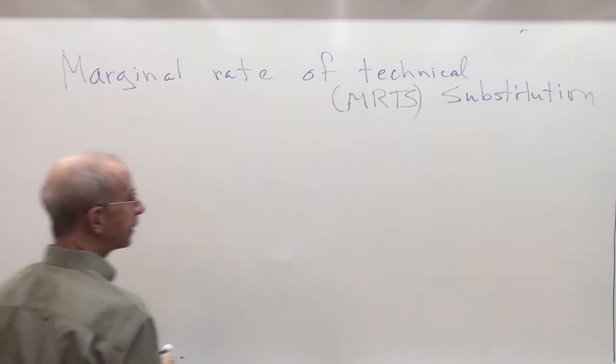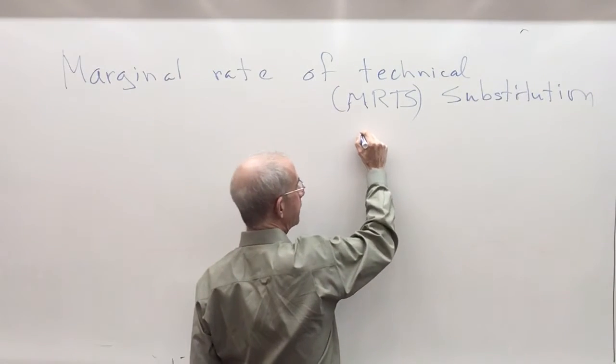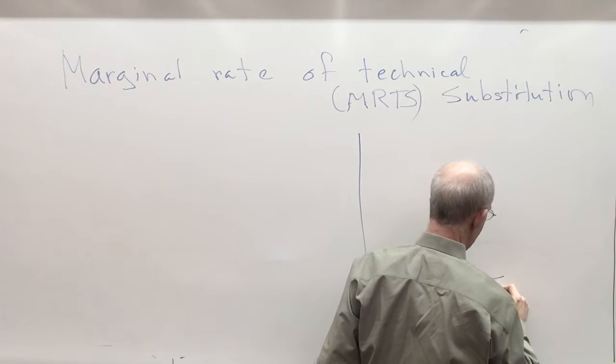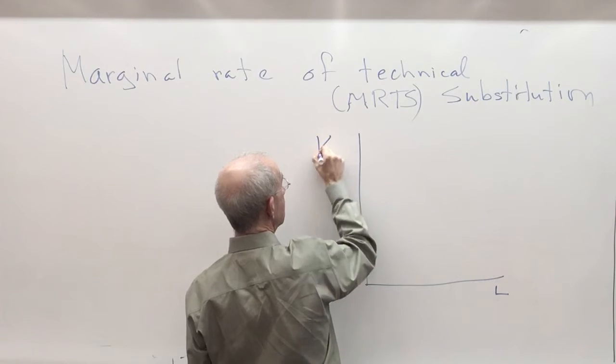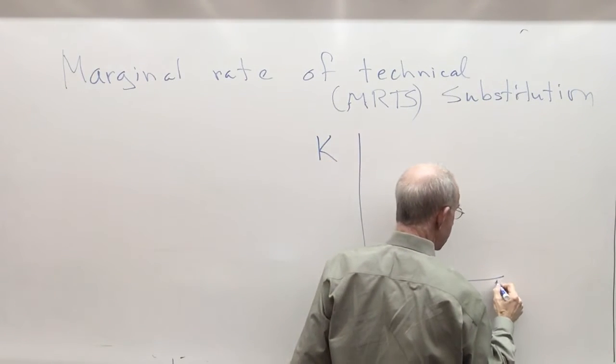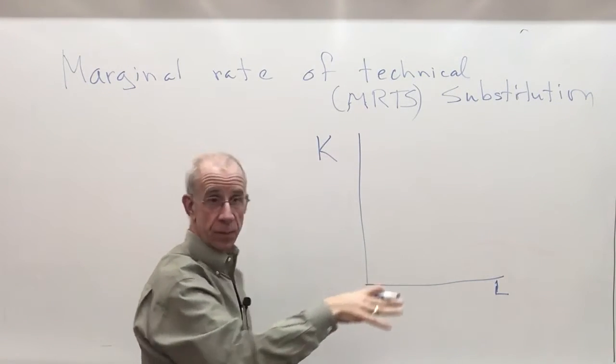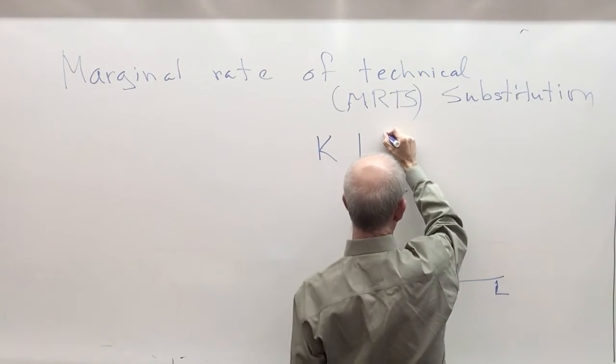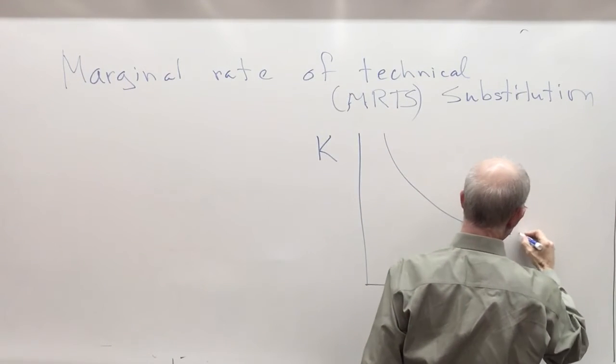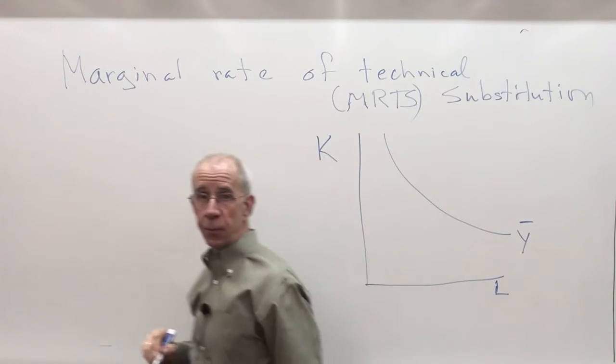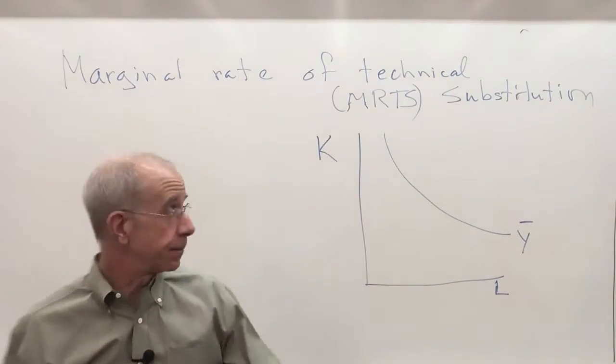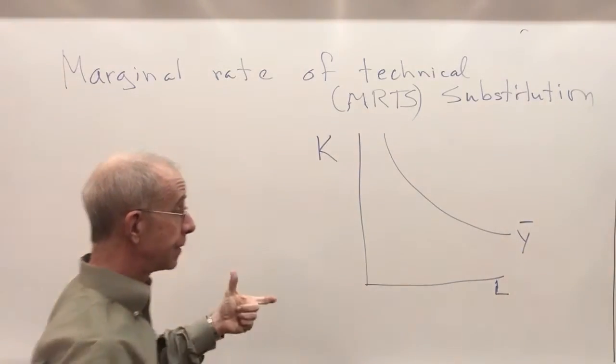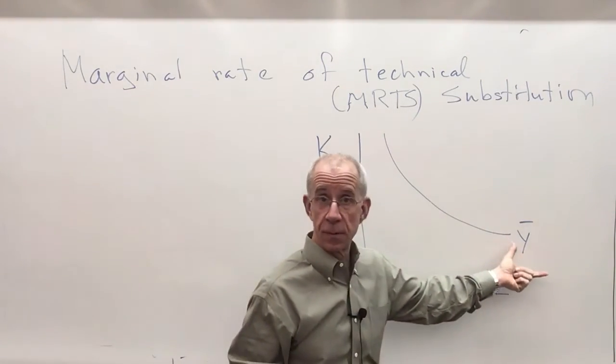The marginal rate of technical substitution with a two input production function is simply the slope of the isoquant. So let's draw an isoquant up here just as a reminder of what we're talking about. So we've got the use of capital on the vertical axis, we've got the use of labor on the other axis, and we've got some fixed level of output that's depicted here. So combinations of capital and labor can be used to produce this level of output.